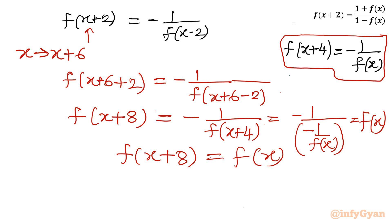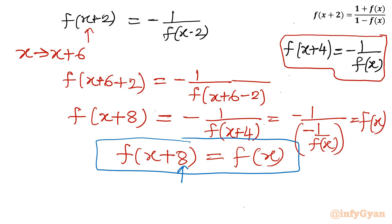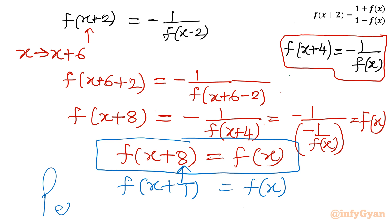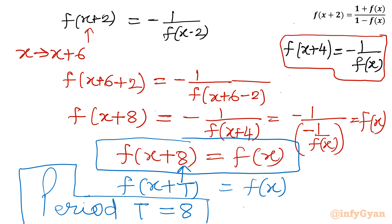So the conclusion is f(x+8) = f(x). By the definition of period, f(x+T) = f(x), so T = 8. The period is equal to 8 — this is our answer. I hope you liked this video. Thank you so much for watching. Don't forget to like, share, and subscribe. Bye-bye until the next video. Good luck.